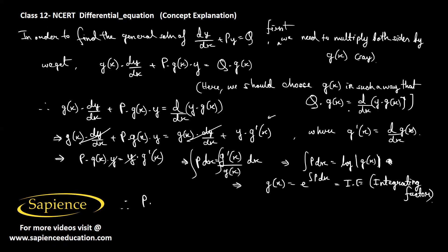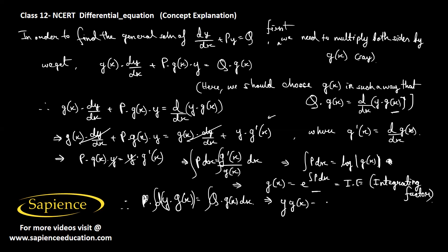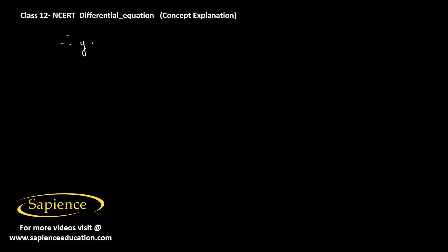Substituting g(x) = e^(∫P dx) back into the equation, the left side becomes d/dx[y·g(x)] = Q·g(x). Integrating both sides gives y·g(x) = ∫Q·g(x) dx. Therefore the final answer is: y·e^(∫P dx) = ∫Q·e^(∫P dx) dx + C.